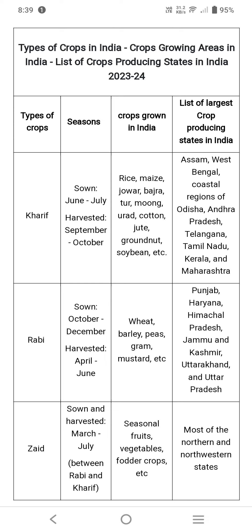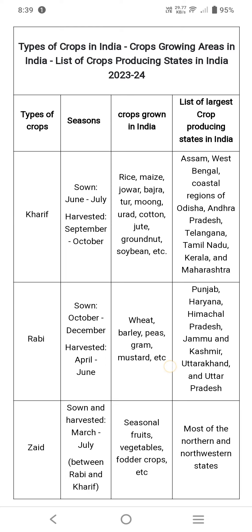In Kharif season, the major crops grown in India are rice, maize, jowar, bajra, tur (red gram), moong, cotton, jute, groundnut, and soybean.